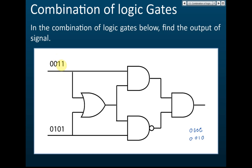For the second practice set: input A is zero, zero, one, one and input B is zero, one, zero, one. One path goes through an OR gate: zero OR zero gives zero, zero OR one gives one, one OR zero gives one, one OR one gives one — output is zero, one, one, one. The other path gives zero, one, one, one as well. Then this feeds into an AND gate: zero, zero gives zero; zero, one gives zero; one, one gives one; one, one gives one — AND gate output is zero, zero, one, one.